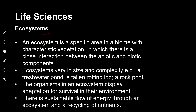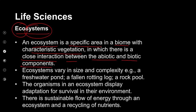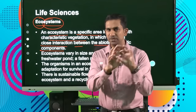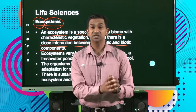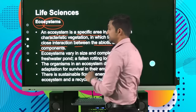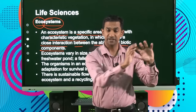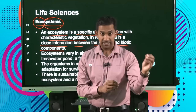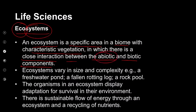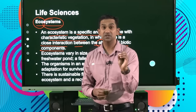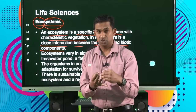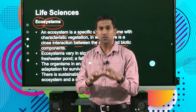It's important that we understand what an ecosystem is. Eco refers to ecology, and systems refer to the interactions of organisms. An ecosystem is a specific area in a biome with characteristic vegetation in which there is a close interaction between the abiotic and the biotic components. Within a biome, we find that there are several different ecosystems, each characterized by the type of vegetation found and the type of organisms that are there. Abiotic factors are those non-living factors in the environment, which include things like temperature, soil, pH, amount of light, and altitude.